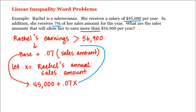Putting that in gives us the following inequality: $45,000 plus 0.07 times X needs to be greater than $56,900.